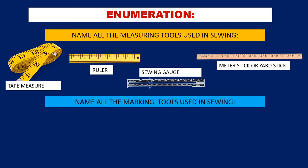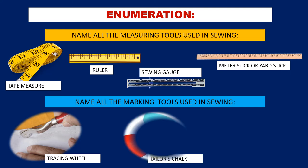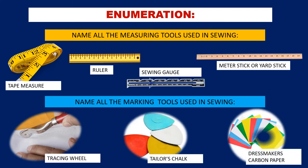Name or enumerate all the marking tools used in sewing. The marking tools are: tracing wheel, tailor's chalk, and dressmaker's carbon paper.